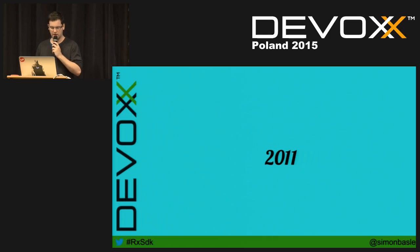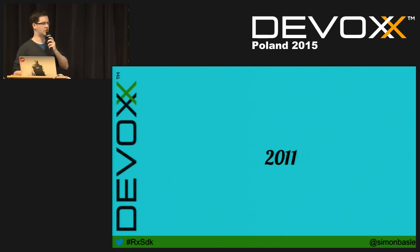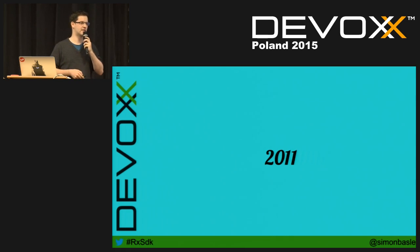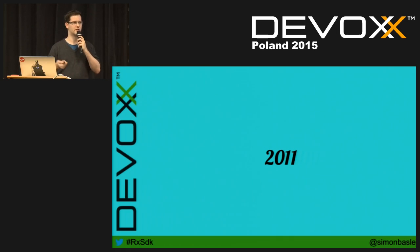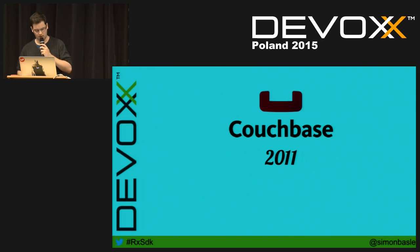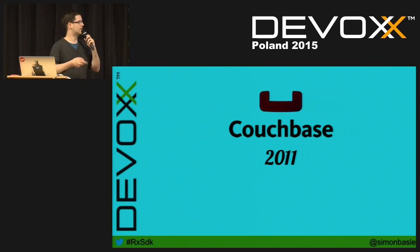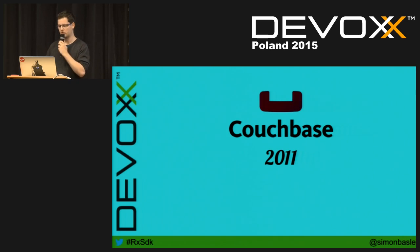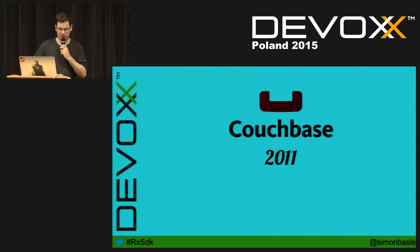A few years later, Membase was merged with another NoSQL database, CouchDB, which is a JSON document-oriented NoSQL database, and they formed Couchbase. So Couchbase is a hybrid between a key-value in-memory store and a document-oriented database, which means the programming model for the SDK had to evolve as well.